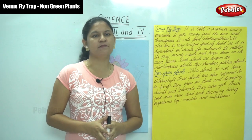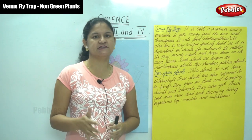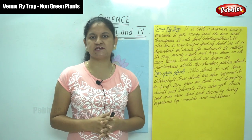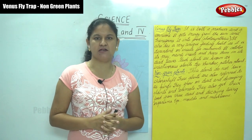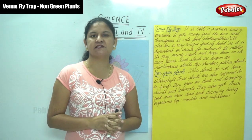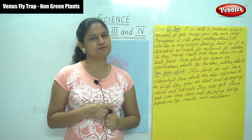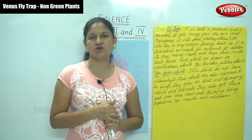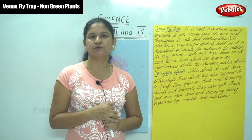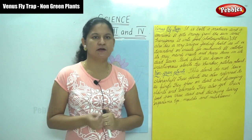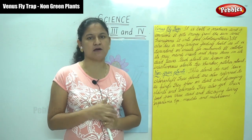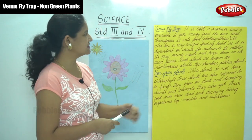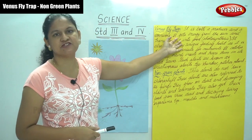Now we are talking about some amazingly different plants. We have spoken about the cactus, which is a desert plant. Instead of leaves it has spines, and these spines don't allow the loss of water. It also protects the plant from harm caused by animals. Next is the Venus flytrap.